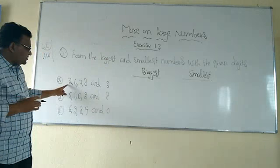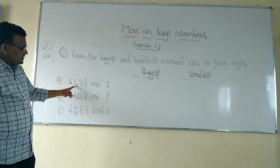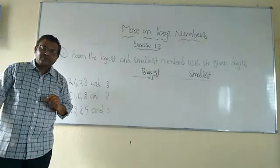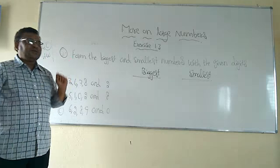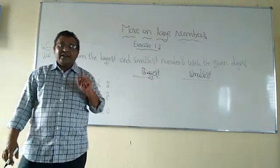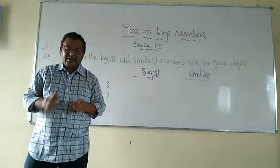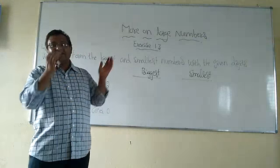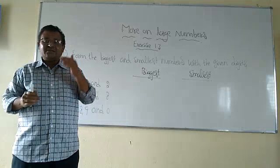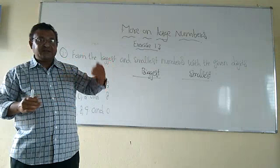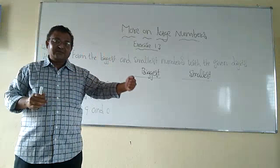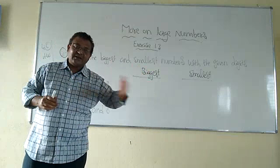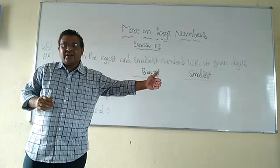The first one — the digits given are three, six, seven, eight, and two. So one thing you have to remember: to write the biggest number, the digits we have to arrange in descending order. That means the first digit is the biggest one, then after that smaller than that one, then next smaller than that one, and so on — in order we have to arrange.